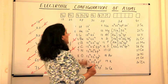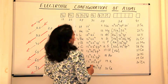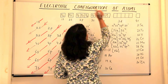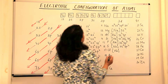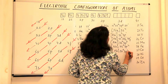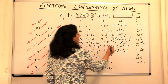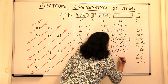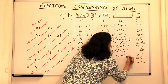Chlorine has the neon configuration as its core, with seven electrons in the outermost shell: 3s2 and 3p5. Then we come to argon — also [Ne] core — with 3s2 and 3p6.